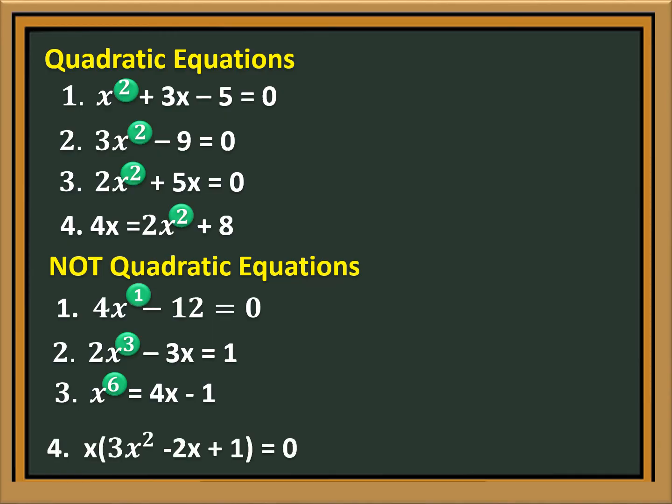Number 4: x quantity 3x squared minus 2x plus 1 is equal to 0. The highest exponent of x is 3, because when you multiply x by 3x squared, the product is 3x cubed. Therefore, it is not a quadratic equation.